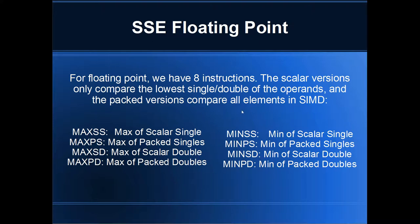The first ones we'll look at are the SSE floating point versions: MaxSS, MaxPS, MaxSD, MaxPD, and then minimum versions of the same thing. These are for discovering the minimum and maximum of each pair of either singles or doubles. The single versions were included with SSE 1, and the double versions came about in SSE 2.